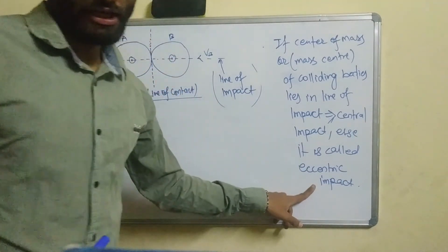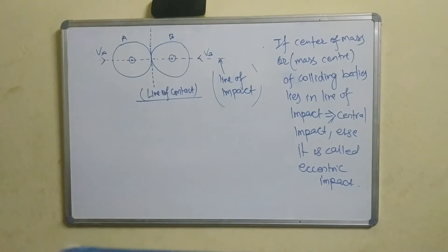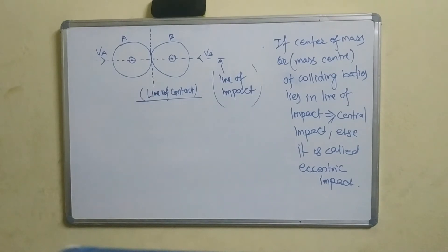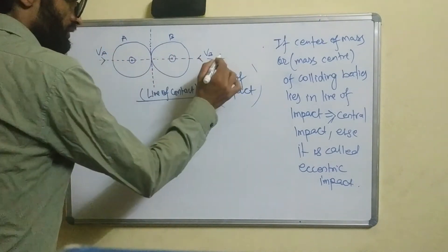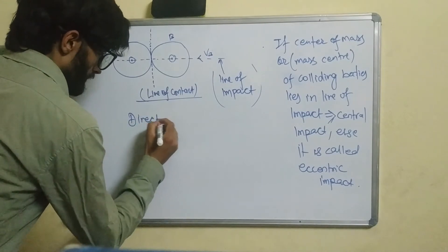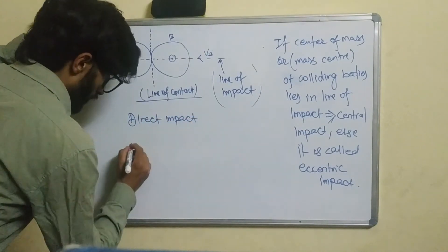This is the eccentric impact. The velocity of the two particles is directed along the line of impact — the line of impact is detected along the line of impact. If either of the two particles moves along a line other than the line of impact, the impact is said to be oblique impact. Direct impact and oblique impact.